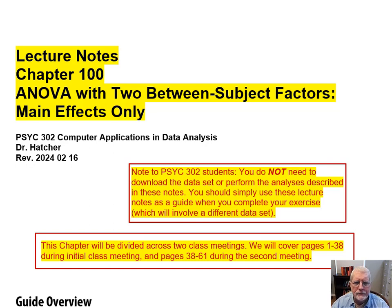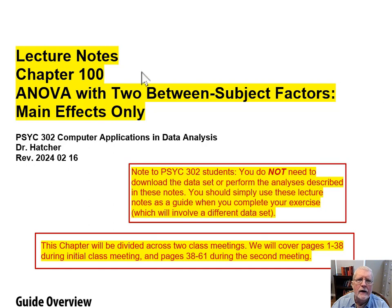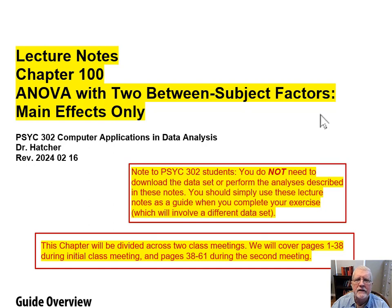I am Larry Hatcher. This is Site 302, Computer Applications in Data Analysis, and I'm now going to take a look at the second half of Lecture Notes, Chapter 100, ANOVA with Two Between-Subject Factors, Main Effects Only.